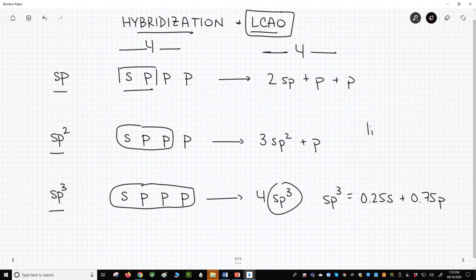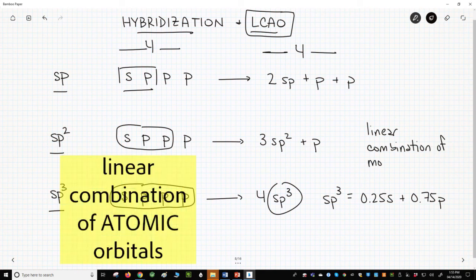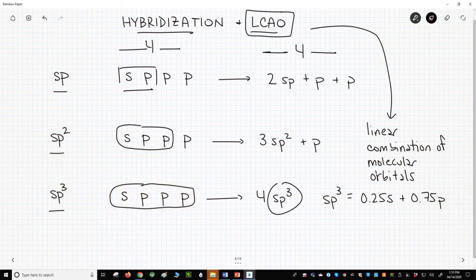LCAO stands for Linear Combination of Molecular Orbitals. LCAO is how new MOs are calculated in MO theory.